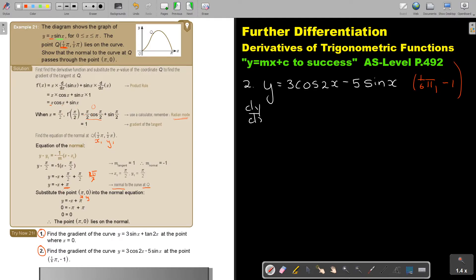dy by dx is equal to 3. What does cos become? It's negative 2 due to that 2 sin 2x minus 5 cos x. So, I'm left with negative 6 sin 2x minus 5 cos x. At x is equal to 1 over 6 π.